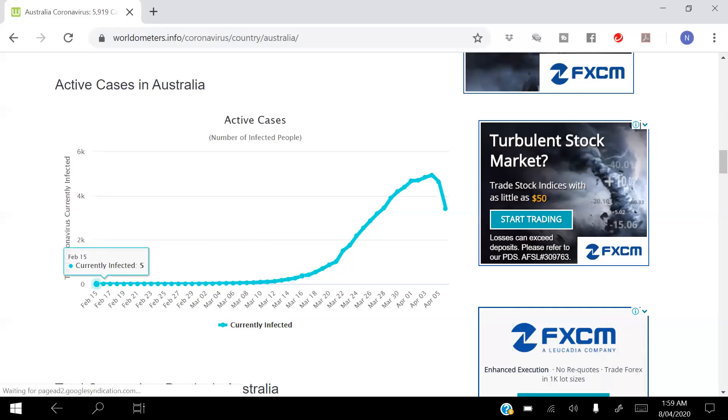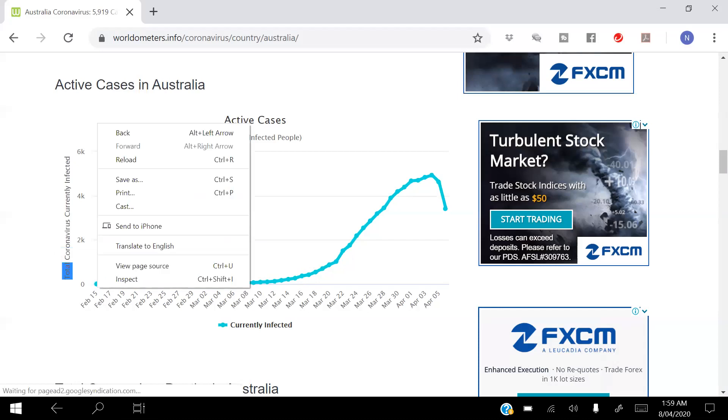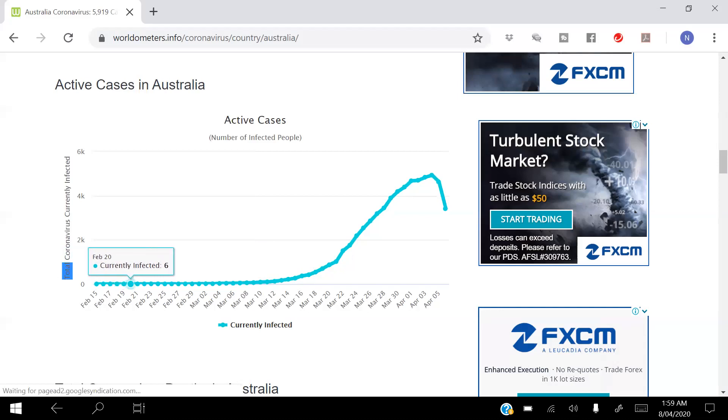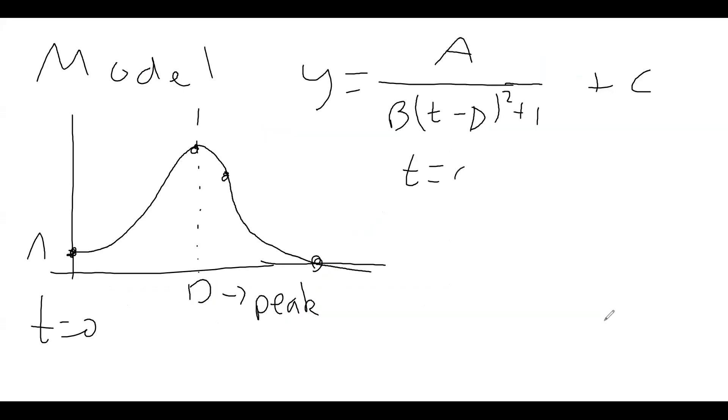So for starting point, I'm not going to use February 15th. If we look here, the first few days, it was five, five, five, then six. So my t equals zero is going to be February 19th. Now go all the way up here. The peak is at April 4th with 4935 active cases. And then currently April 6th, we have 3418. So my three points are t equals zero, the y value was five, and that was February 19th.